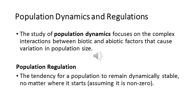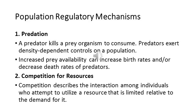Population regulation is the tendency for a population to remain dynamically stable no matter where it starts. We assume that the starting point is non-zero for every population. So the population remains stable but in a dynamic condition. Different population regulatory mechanisms affect the population size of a species.